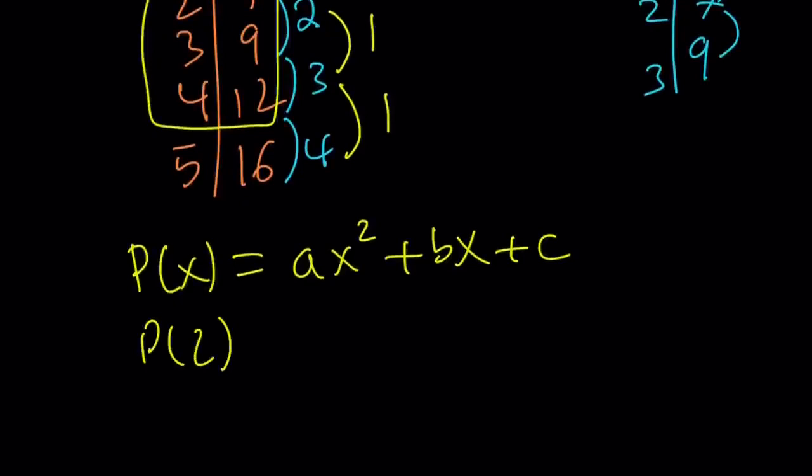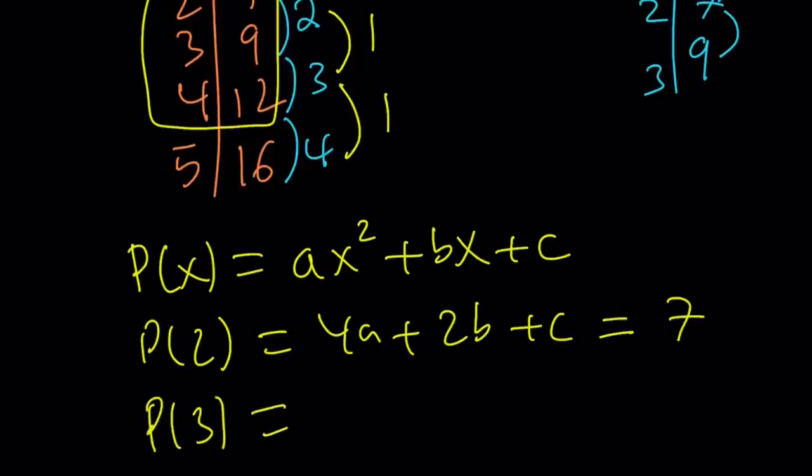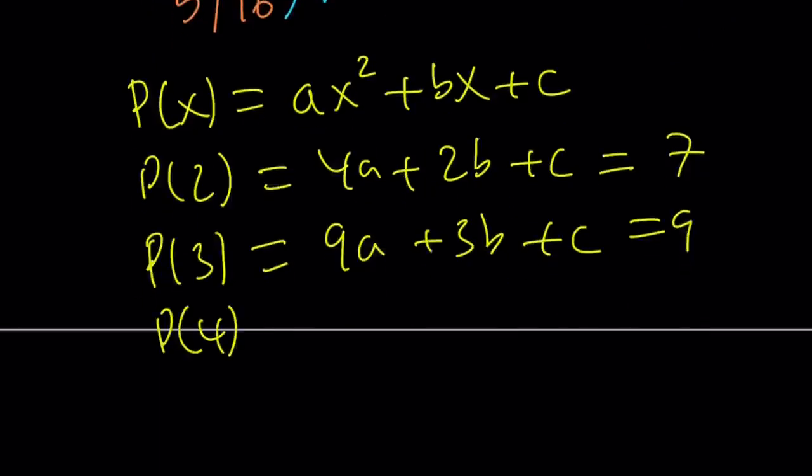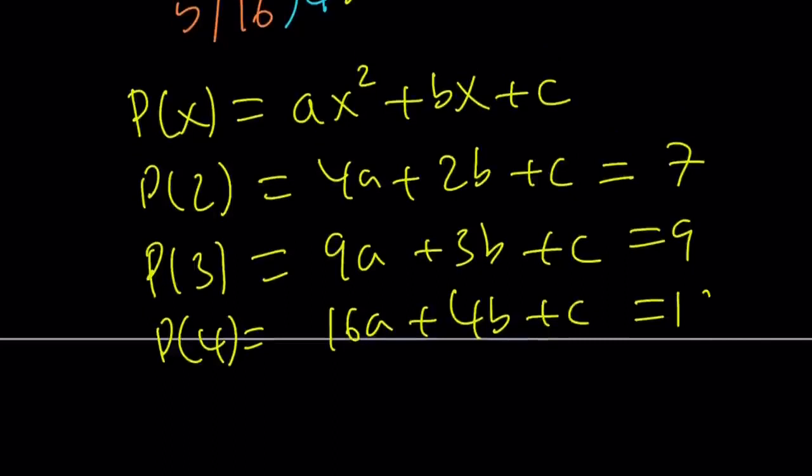P of 2 is going to be 4a plus 2b plus c equals 7. P of 3 is going to be 9a plus 3b plus c equals 9. And finally, P of 4 equals 16a plus 4b plus c, and that's equal to 12. Awesome.